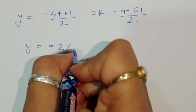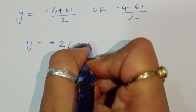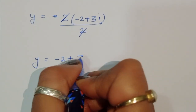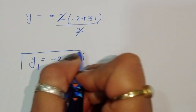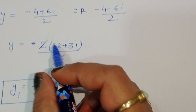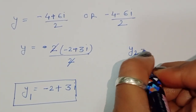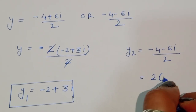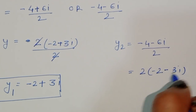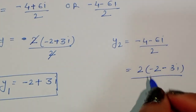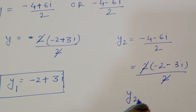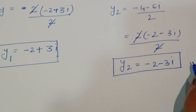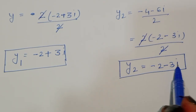We can write minus 36 as 9 times 4 times minus 1. So square root of minus 36 equals square root of 9 times square root of 4 times square root of minus 1, which equals 3 times 2 times i equals 6i. So y1 equals (minus 4 plus 6i) upon 2 equals minus 2 plus 3i, and y2 equals (minus 4 minus 6i) upon 2 equals minus 2 minus 3i. But these are imaginary solutions, so they are rejected.